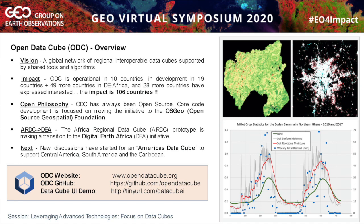We're also making a transition in taking the African Regional Data Cube prototype, which was just five countries, to Digital Earth Africa, which covers the entire continent. This will take us a bit longer, probably through the end of this year. We're moving data, moving users, and all of this is coming together quite nicely. With the recent global issues, things are a little bit slower than usual. Most recently, we've started some discussions for an Americas Data Cube, which will support Central and South America as well as the Caribbean.